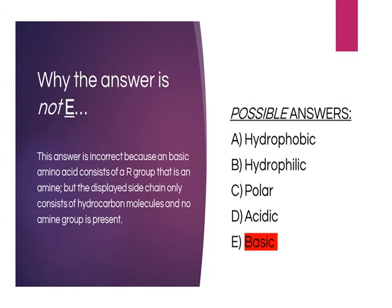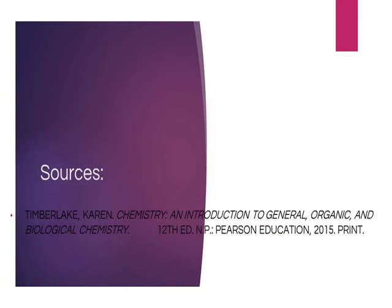The answer is not E, basic, because a basic amino acid consists of an R group that is an amine, but the displayed side chain only consists of hydrocarbon molecules and no amine group.